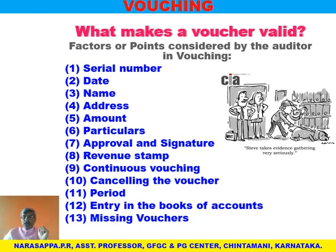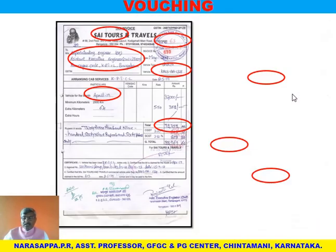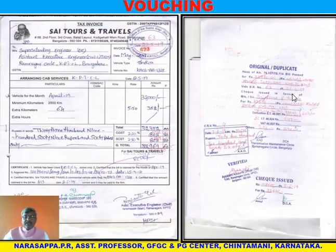The period of that particular voucher should belong to the year of auditing. Then, entry in the books of accounts — any voucher said to be a valid voucher must have a corresponding entry in the books of accounts. If it is not entered in the books of accounts, though the transaction occurs, it is not a valid voucher. There are also certain missing vouchers — whenever the auditor asks for a voucher and it may not be available, it is called a missing voucher.